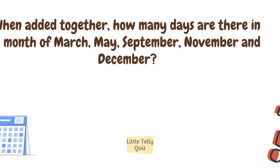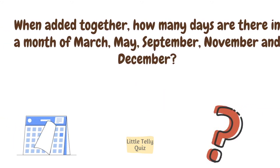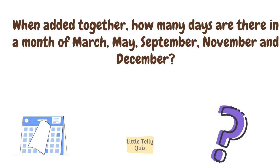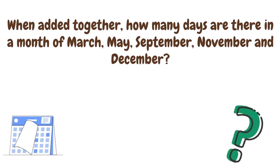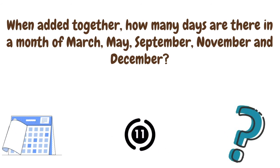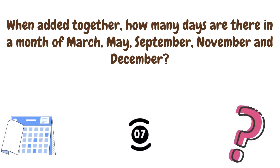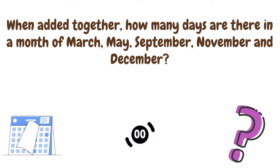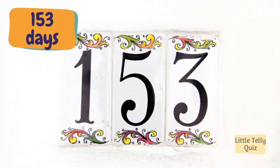When added together, how many days are there in the months of March, May, September, November, and December? The answer is 153 days.